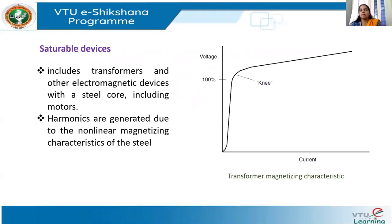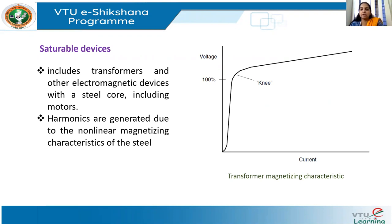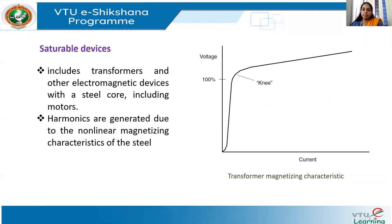Now let us come to saturable devices. Saturable devices are those where the magnetic core gets saturated. The most important and widely used saturable device in power systems is the transformer. Normally a transformer is a linear device, but when saturated, there is a knee point beyond which the relationship becomes non-linear. Saturable devices can therefore be considered non-linear devices when they enter saturation.